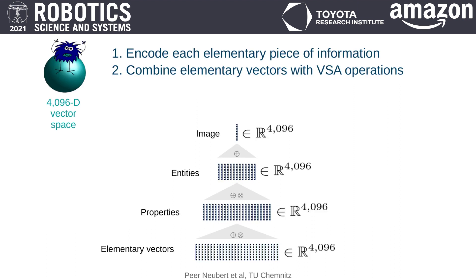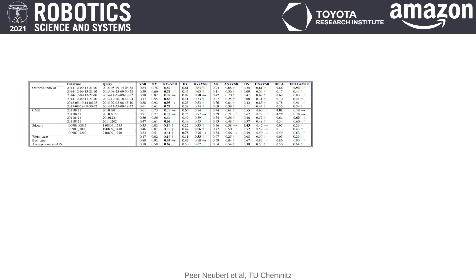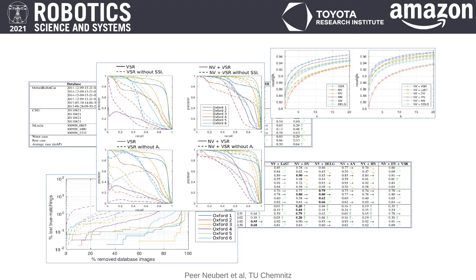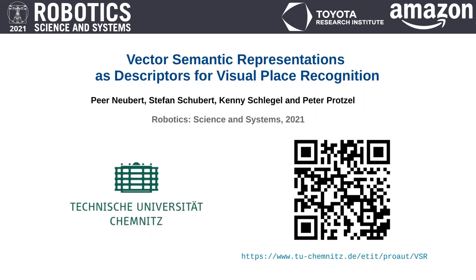We believe VSAs can serve as a general tool for versatile encoding of different types of information in descriptors for a broad range of tasks. In the paper, we provide tables and curves showing that this approach is beneficial for place recognition in terms of average precision and recall at k, compared to existing descriptors like NetVLAD, DELG, or LoST. Moreover, our proposed descriptor provides somewhat complementary information to existing descriptors, such that a combination with NetVLAD is considerably better than either standalone descriptor. More information and code are available through the paper or the website.